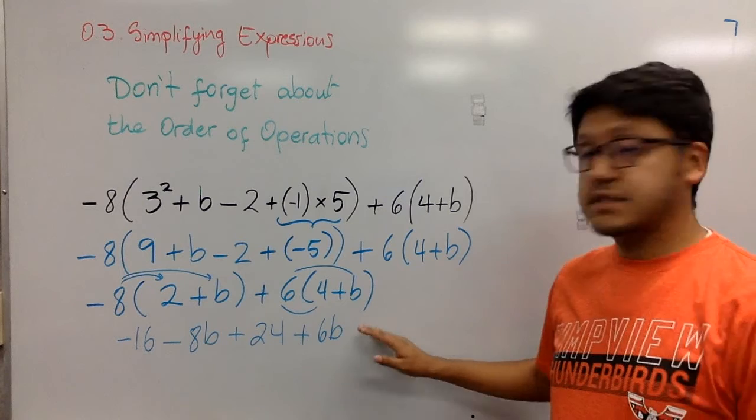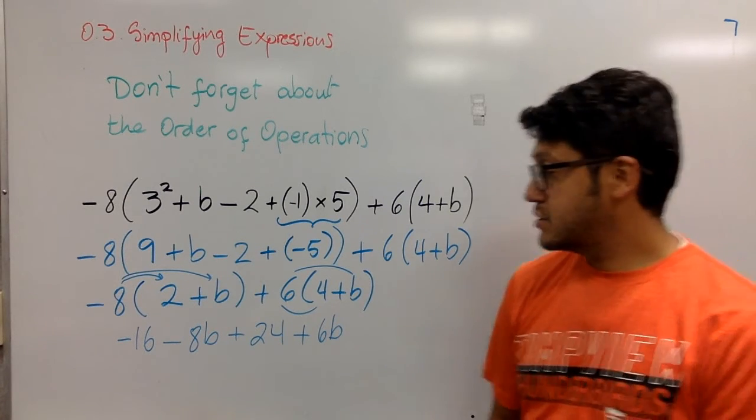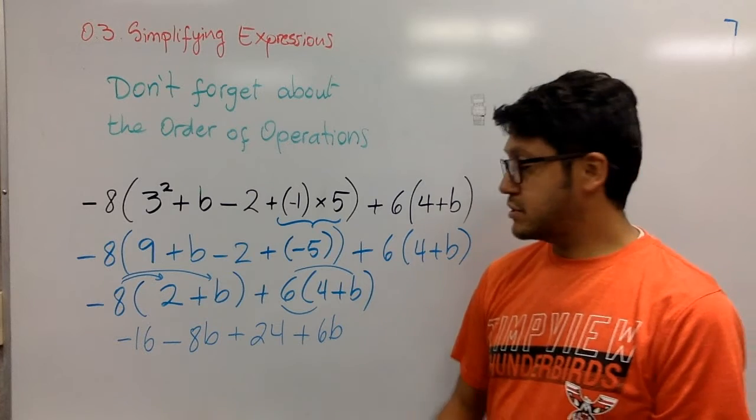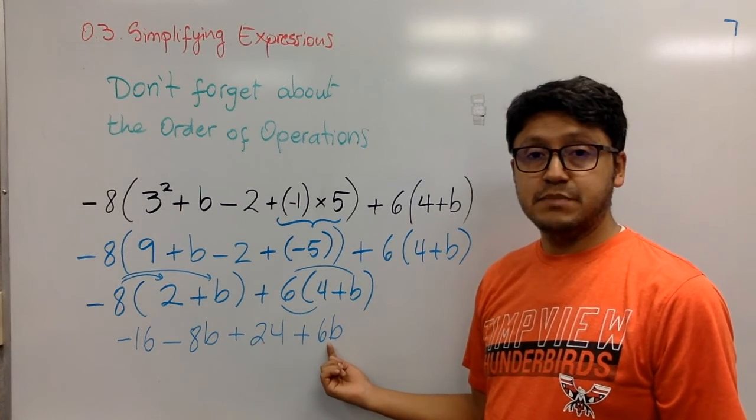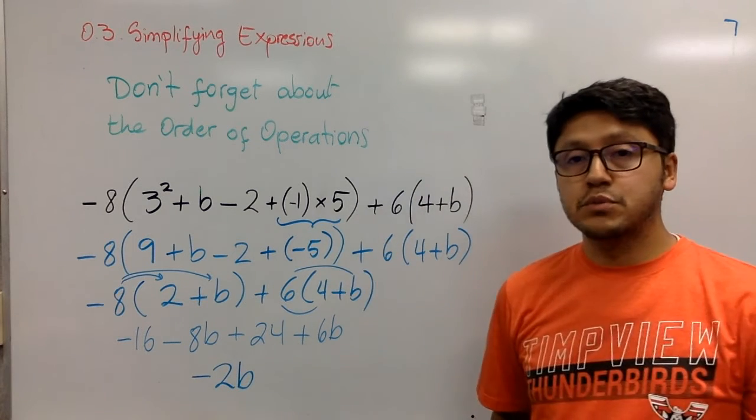Finally, because this is not the last step, I can see like terms in here. So let's begin with the variables. Negative 8b plus 6b is negative 2b.